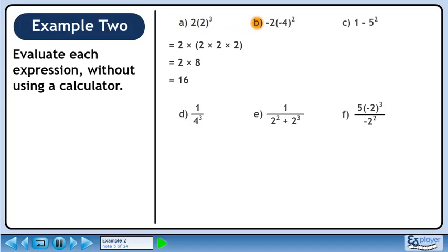In Part B, we'll calculate minus 2 times minus 4 squared. Expand minus 4 squared to get minus 4 times minus 4. Minus 4 times minus 4 is positive 16. And minus 2 times 16 is minus 32.